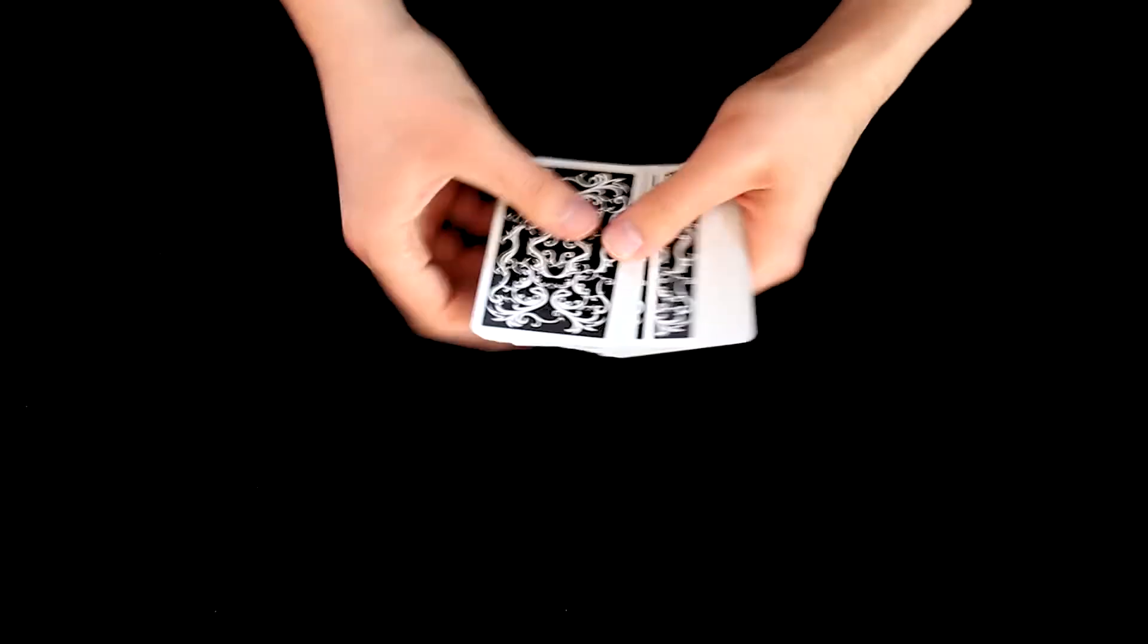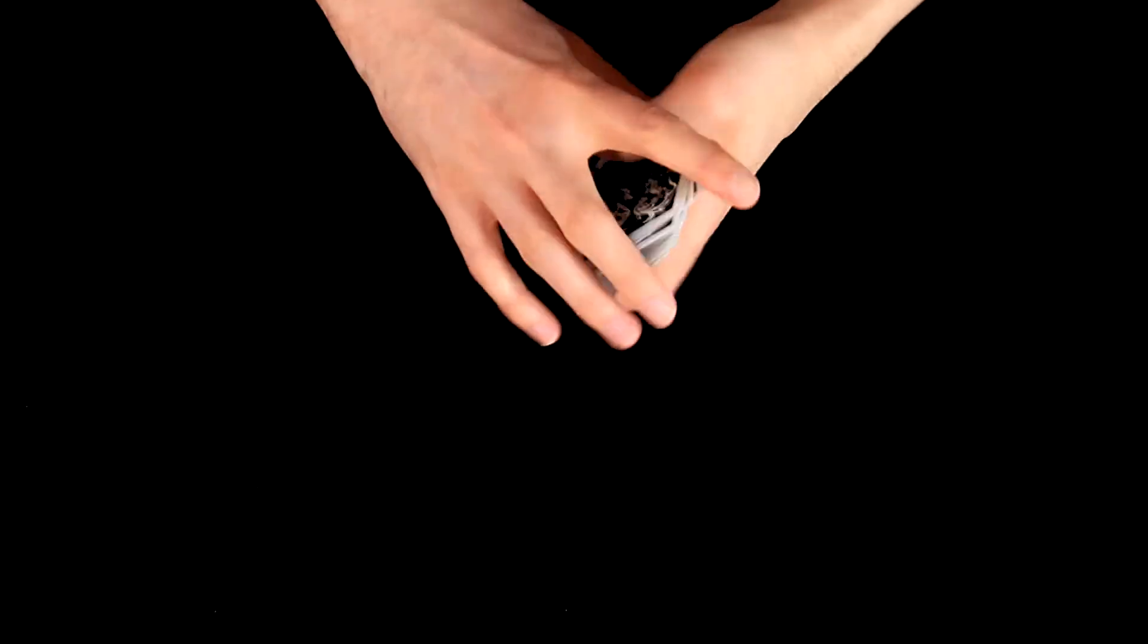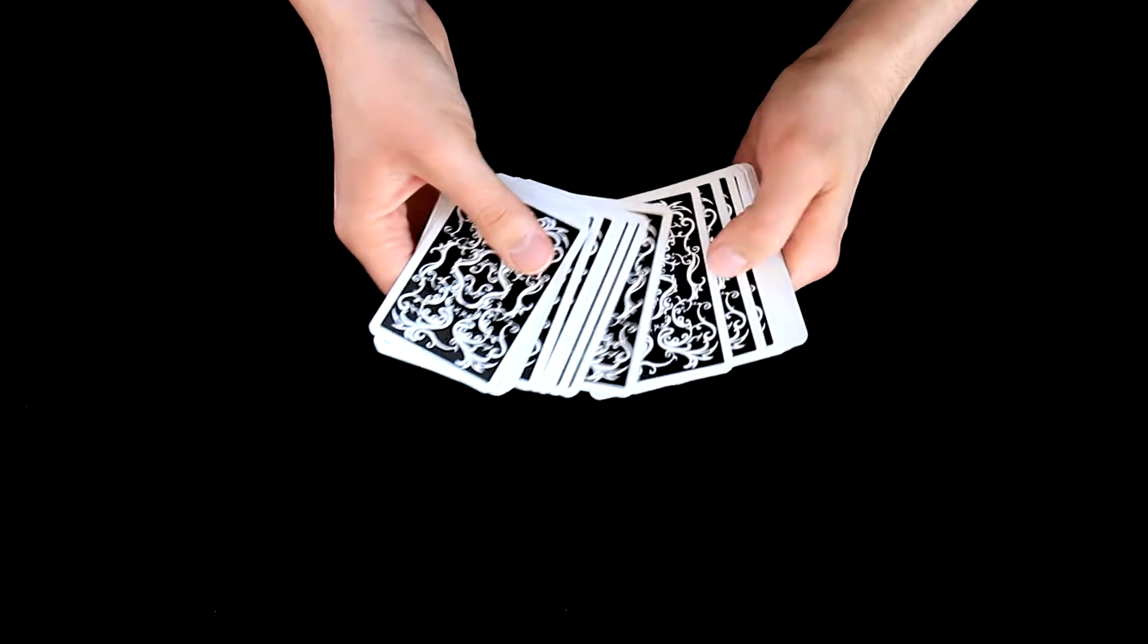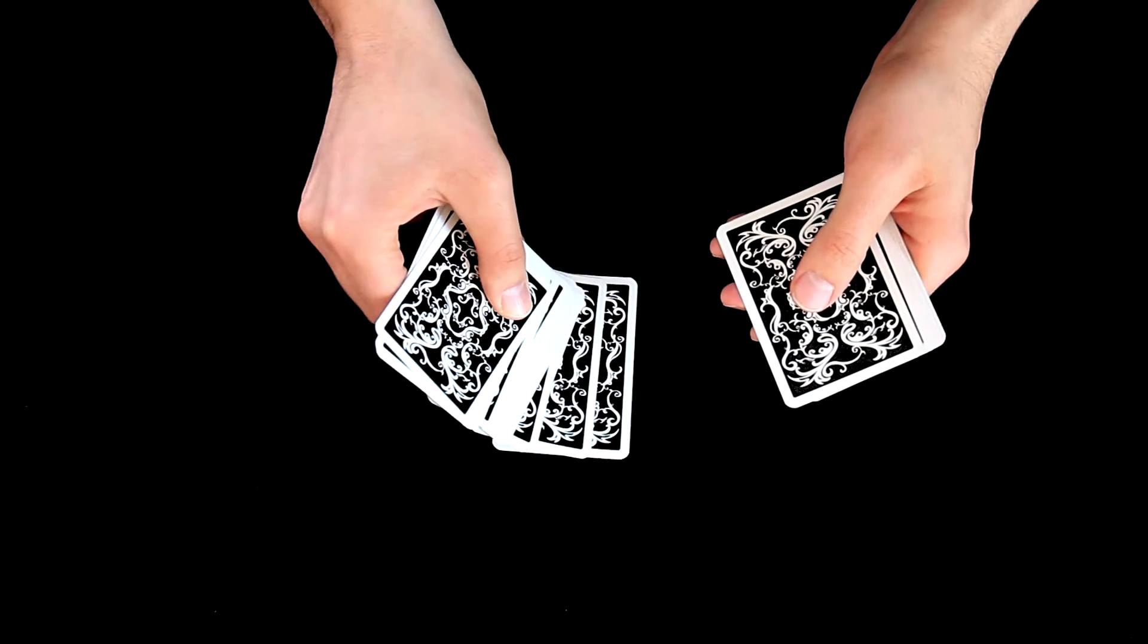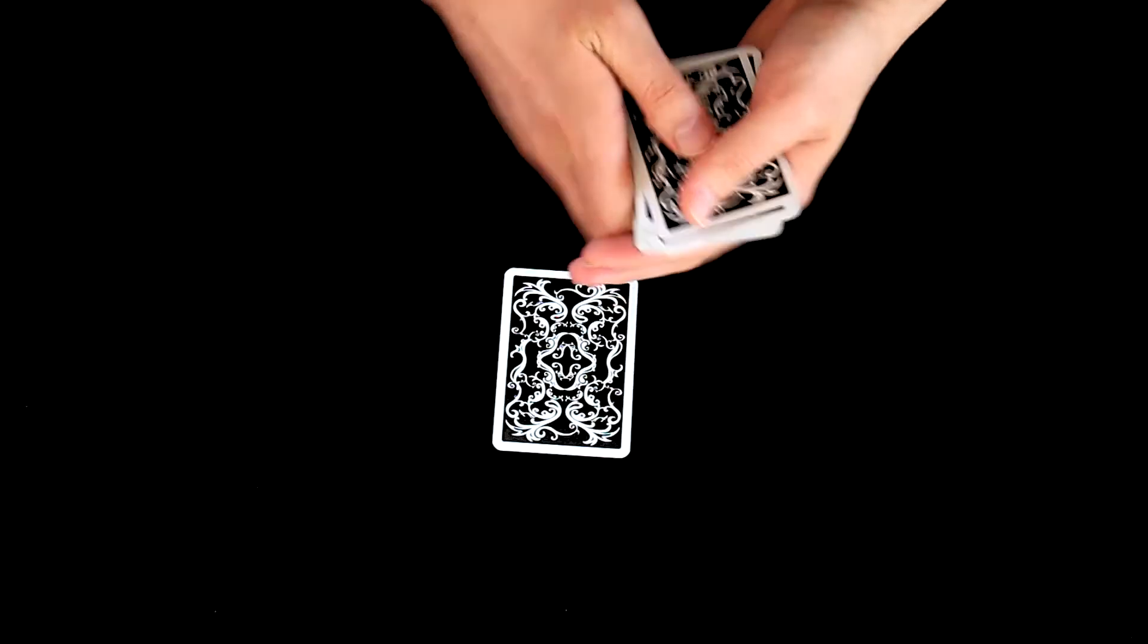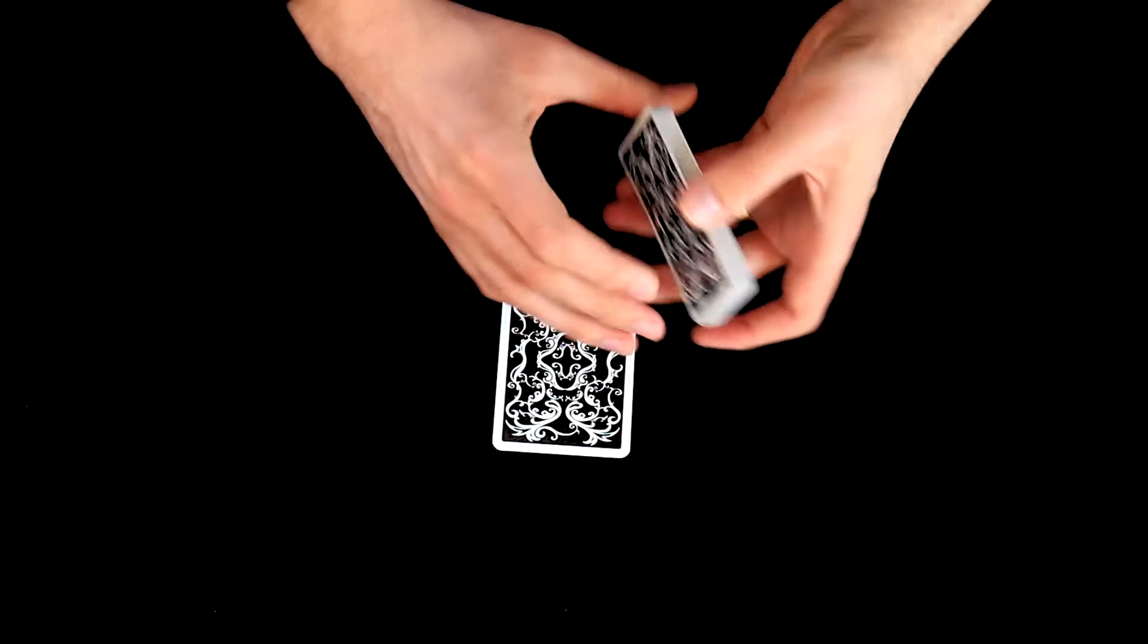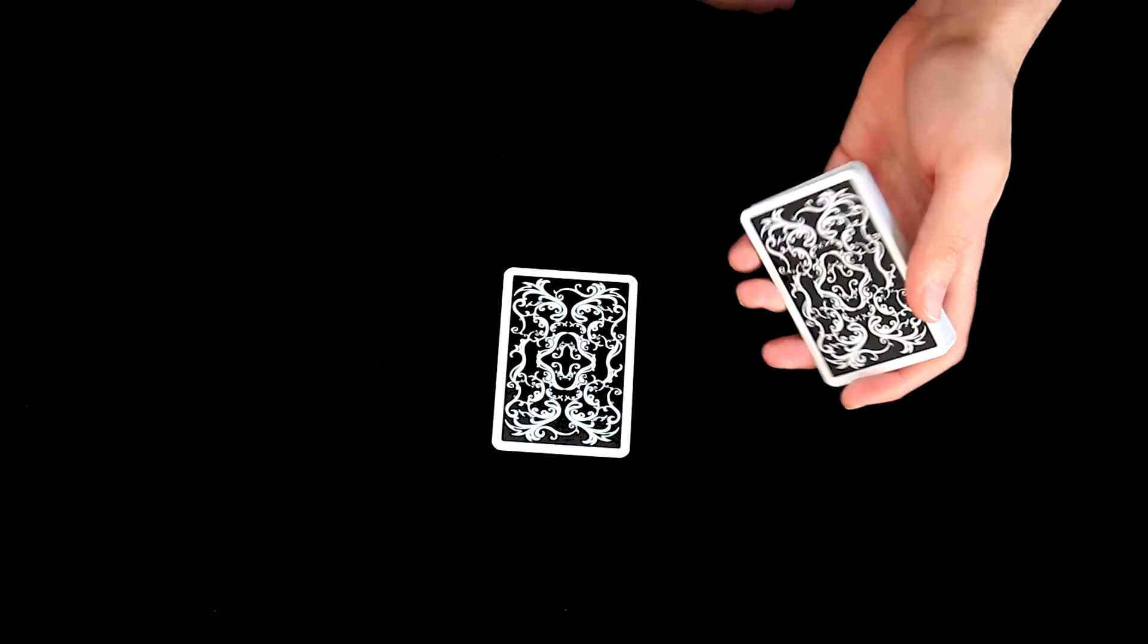We will shuffle the packet and ask the spectator to cut the deck as well, and then select one card at random. I have here 24 remaining cards, so we will divide it into 2 piles, 12 cards each.